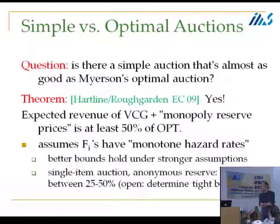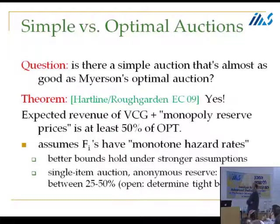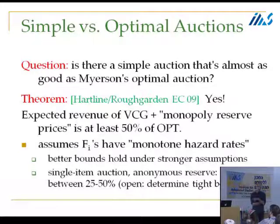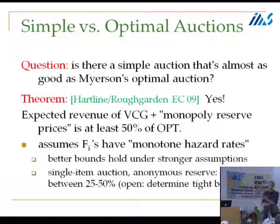My assumptions on distributions: they're independent but do not have to be identical — different bidders can have different valuation distributions, resulting in different monopoly reserve prices. I assume they satisfy the monotone hazard rate condition: informally, their tails can be as heavy as an exponential distribution but no heavier. I'll show you why that's useful in the proof in a couple of slides.